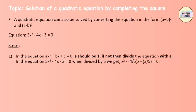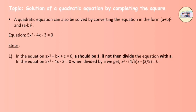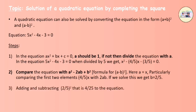In the equation 5x squared minus 4x minus 3 equals to 0, when divided by 5 we get x squared minus 4 by 5 x minus 3 by 5 equals to 0. Comparing with a squared minus 2ab plus b squared, where a equals to x, and comparing the first two terms, 4 by 5 x corresponds to 2ab. Solving this gives b equals to 2 by 5. Step 3: adding and subtracting 2 by 5 whole squared, that is 4 by 25, to the equation.